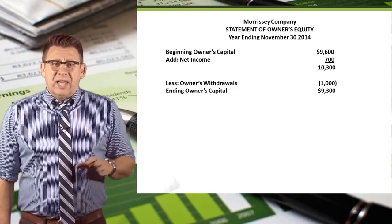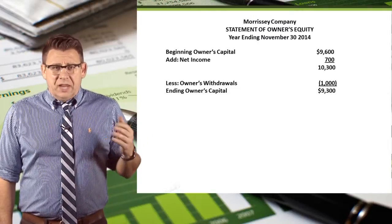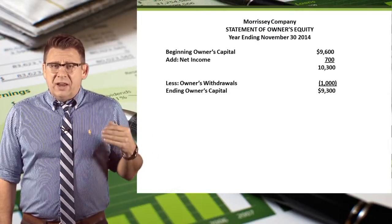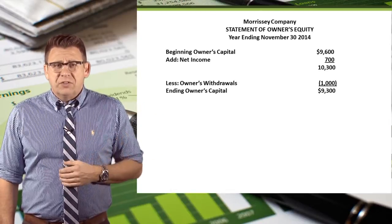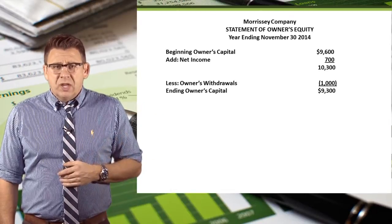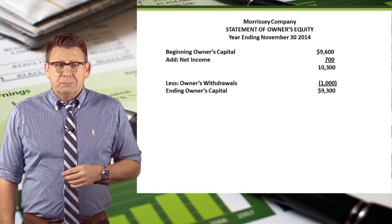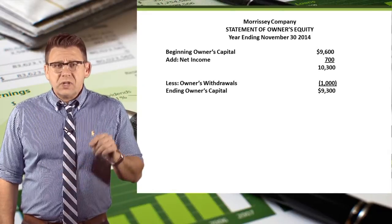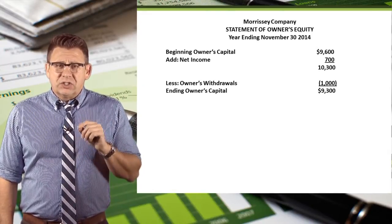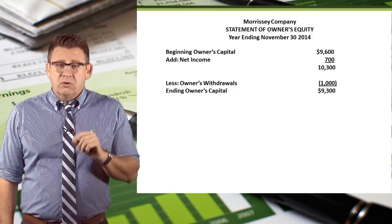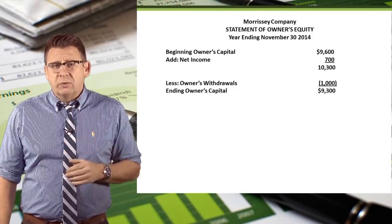The statement of owner's equity has the company name, the name of the financial statement, and the date, which is always 'year ended' and then whatever the date is. This date is done exactly like the income statement. So the statement of owner's equity details the change in the owner's capital account for a period or range of time.